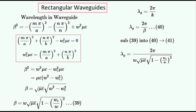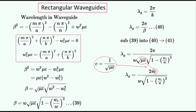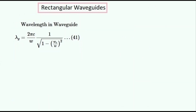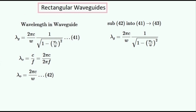The wavelength in the guide is also equal to this in terms of the radial frequencies. Simplifying this equation gives us this. We can also write the equation out by separating it into two fractions. This is the wavelength of the wave outside the waveguide, which is also equal to this. So this is what the wavelength in the guide is equal to in terms of the free space wavelength.